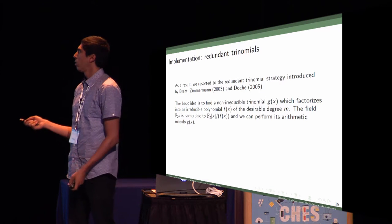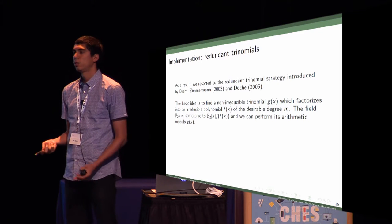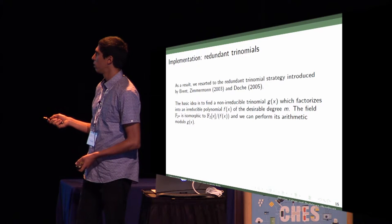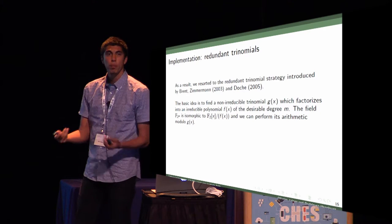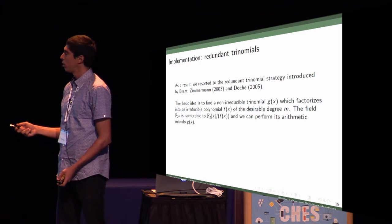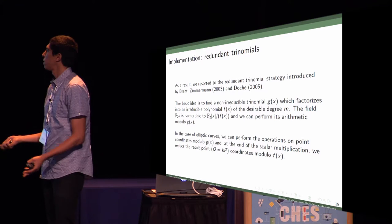In our case, we have to find a trinomial G(X) which factorizes into degree 149. We can construct our field with this polynomial F(X), but we perform throughout our algorithm modulo G(X), which is this trinomial here.